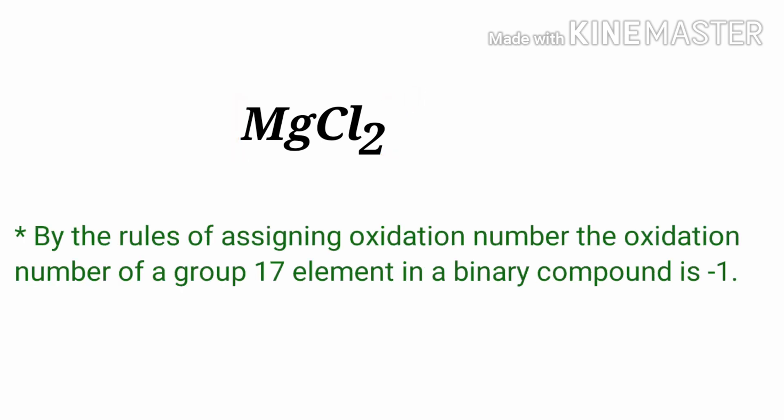By the rules of assigning oxidation number, the oxidation number of a group 17 element in a binary compound is minus one. Chlorine is a group 17 element, so the oxidation number of chlorine is minus one.